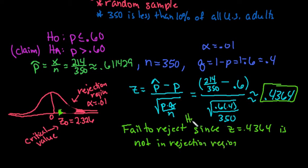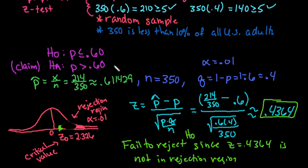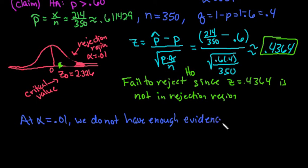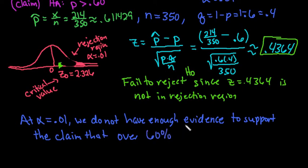Remember, our conclusion is always about the null hypothesis, so we're going to fail to reject H sub 0. Now if we go back to our claim, remember that our claim was about the alternative hypothesis. We don't have enough information to reject this, so that means we do not have enough evidence to support the claim. Even if I used alpha equals 0.05, there's no way that this would be rejected. So we do not have enough evidence to support the claim that over 60 percent feel the bailouts were bad.